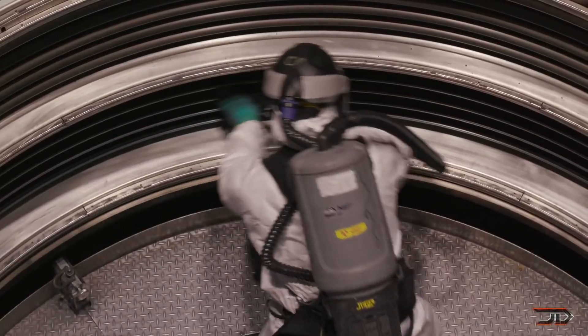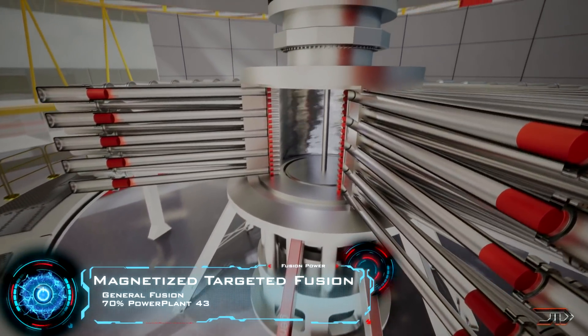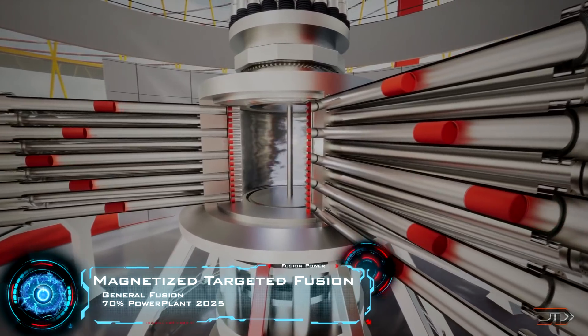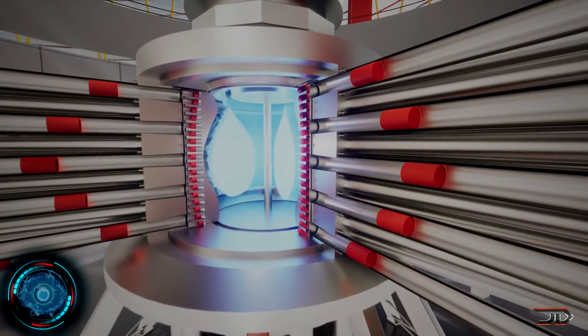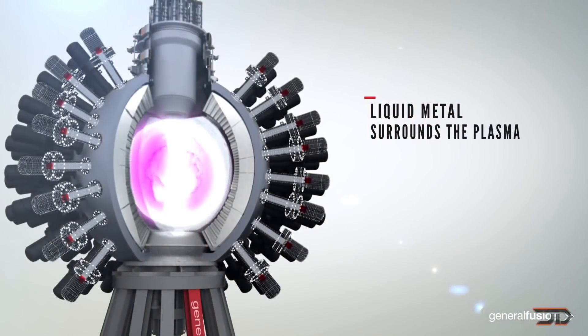And obviously there is magnetized targeted fusion, which you have probably seen me talk about before. This particular machine uses steam powered pistons to compress a metal liquid, which surrounds the plasma. Heat is then transferred back into the liquid metal, and eventually used to initiate a steam process to drive a turbine.